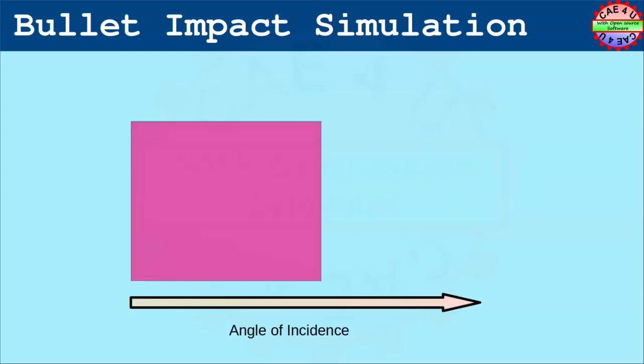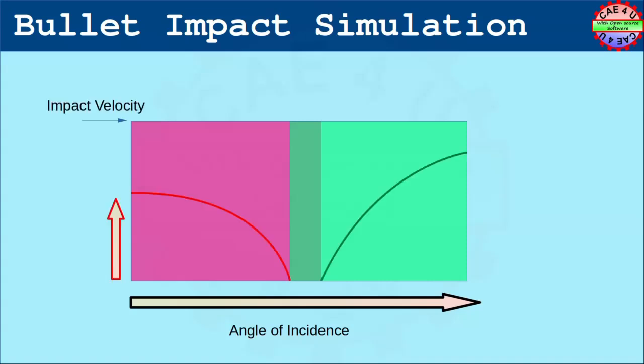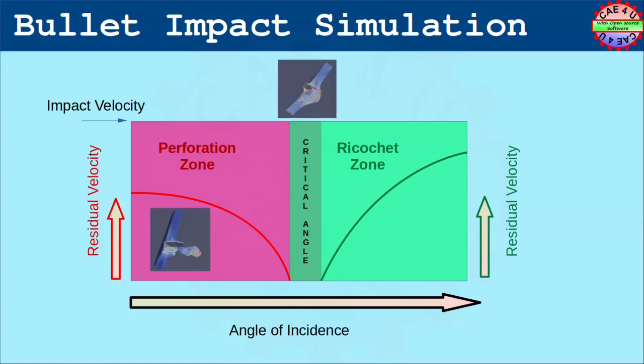As we earlier pointed out, our objective is simulating high velocity impact and compare with publications to understand the usefulness. Also, in the process to explore OpenRadioss better. The usefulness of the simulation is to analyze the protectiveness of a structure against a projectile traveling at high velocity. That is to know if the projectile would get stopped or deflected. The latter is also referred as ricochet effect of a projectile. So, let's see what we have considered for the simulation.